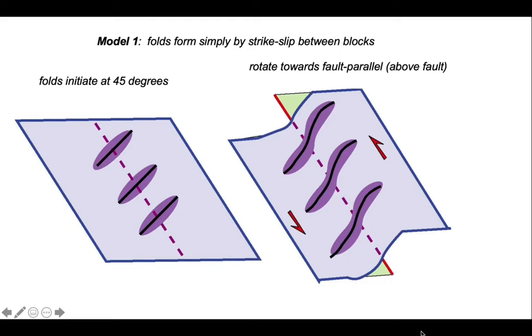So that's model 1: folds formed by strike-slip shearing above a strike-slip fault. The folds initiate at 45 degrees and then rotate, gradually becoming fault-parallel as the shearing continues. The folds initiate in an en echelon pattern, but to achieve parallelism with the fault clearly requires a lot of strain and therefore a lot of displacement on the fault.